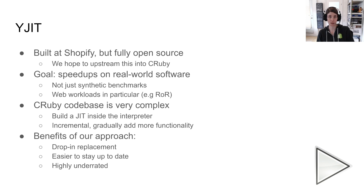YJIT is an open-source project built at Shopify that we hope to upstream into CRuby. The main goal is to produce speedups on real-world software, not just synthetic benchmarks — we're mostly concerned about web workloads such as Ruby on Rails. The CRuby codebase is very complex, so we've chosen an approach where we're building a JIT compiler essentially inside of the interpreter, incrementally and gradually adding more functionality. The benefits are that YJIT is basically a drop-in replacement for an existing CRuby binary, and it's very easy for us to stay up-to-date with upstream changes, which I think is highly underrated.